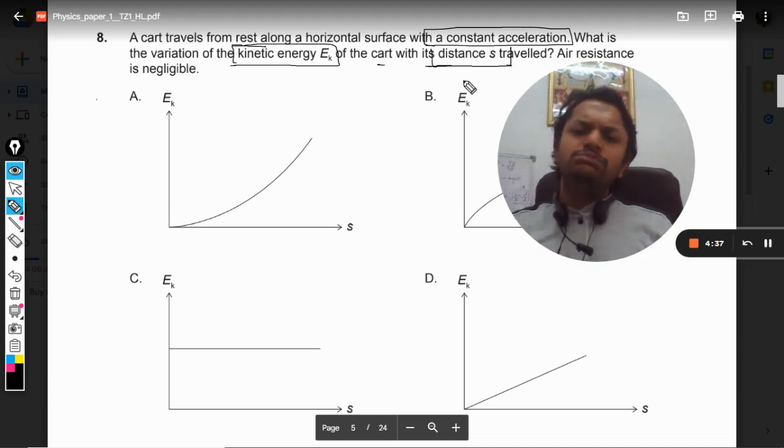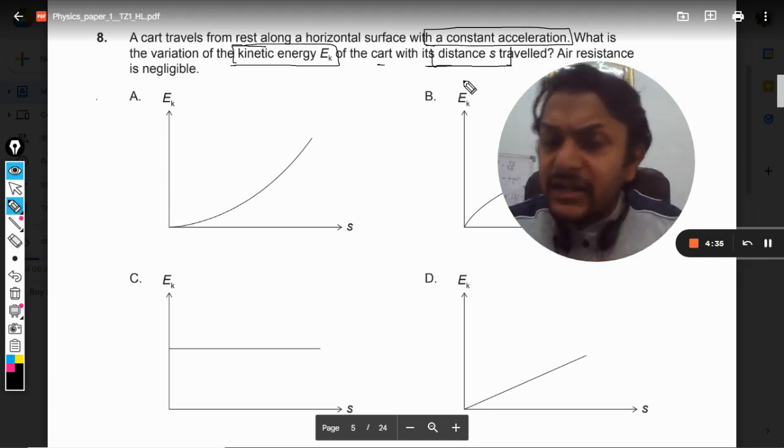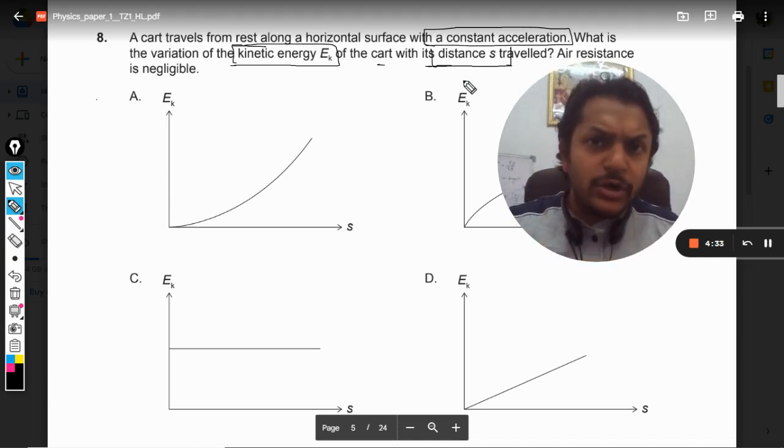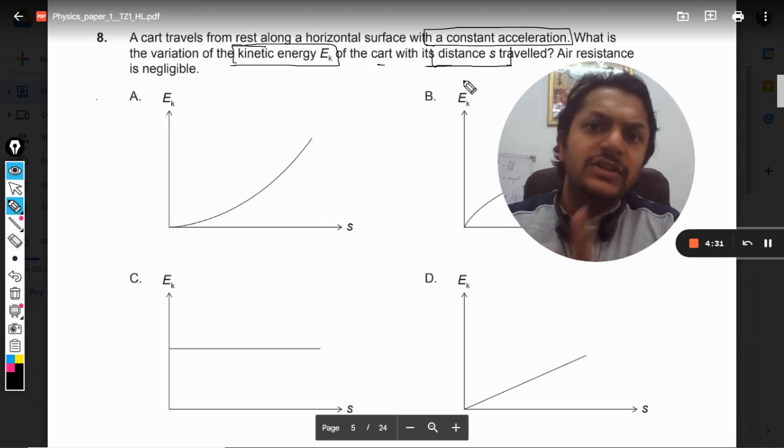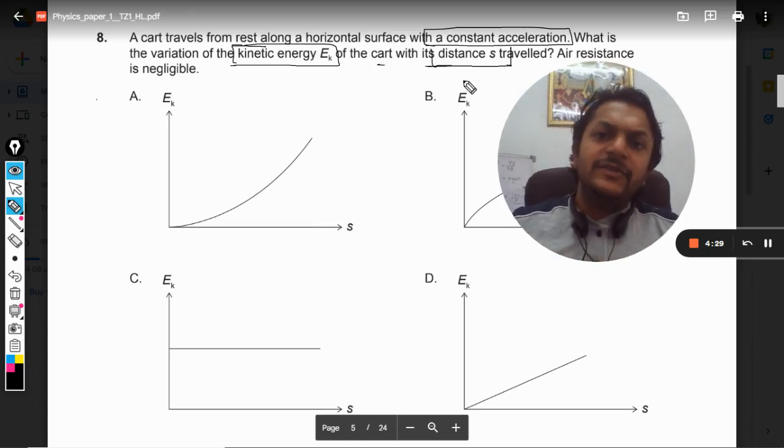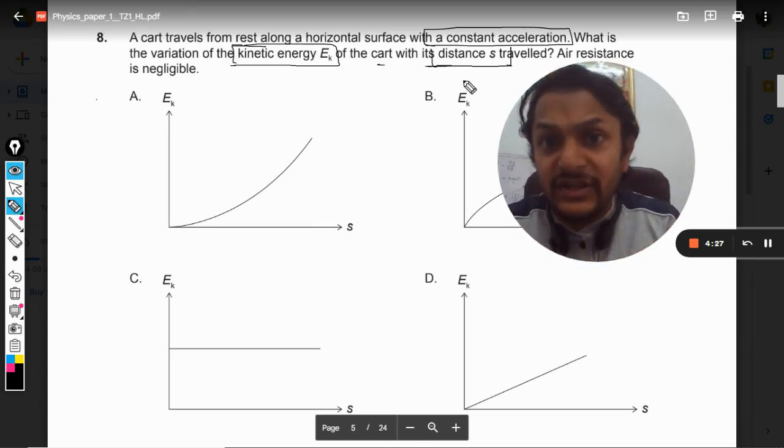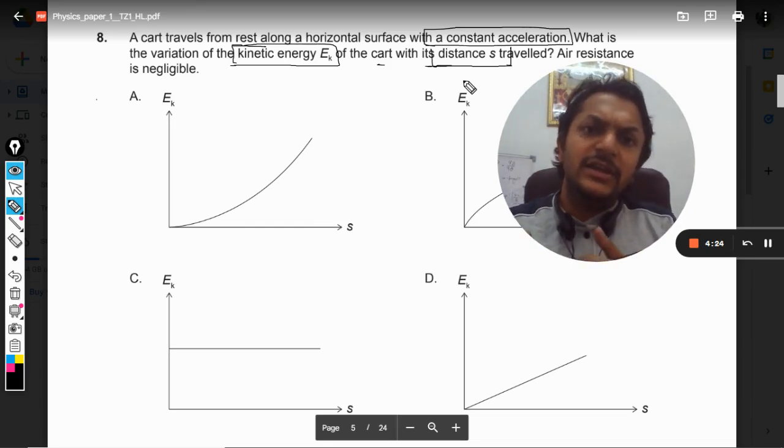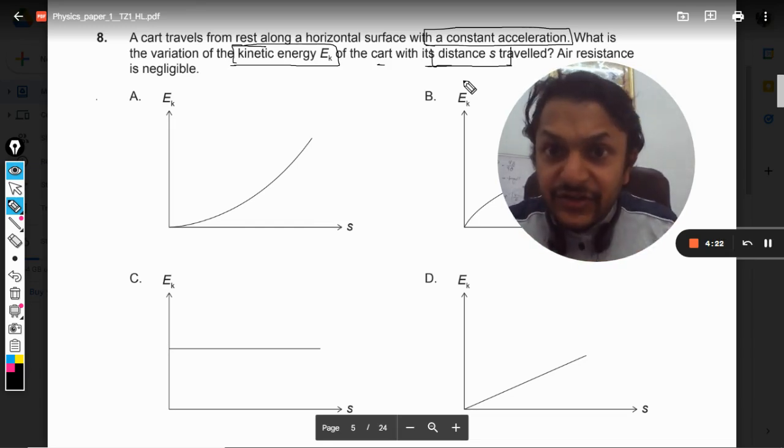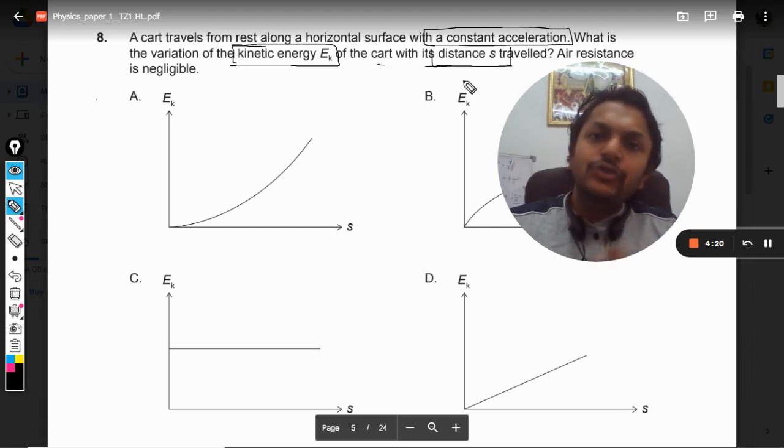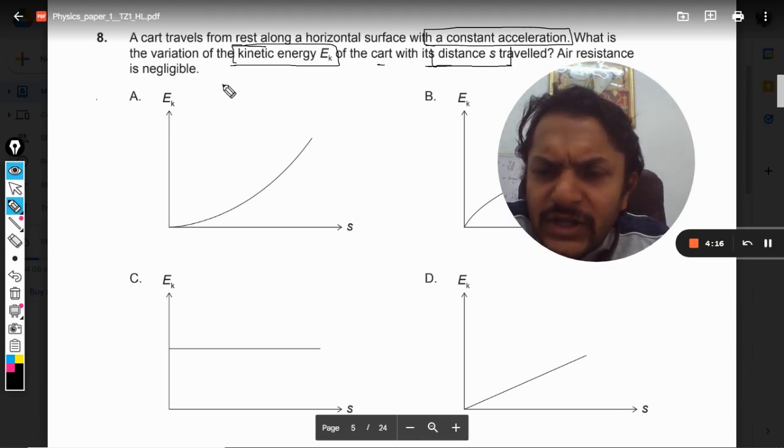We need to relate the kinetic energy of the body. Because the body is getting accelerated, the velocity is increased, and we will say that because the velocity is increased, the kinetic energy is increasing. So we have to see how the kinetic energy is increasing.